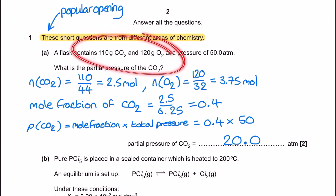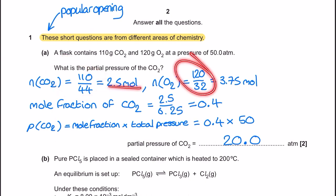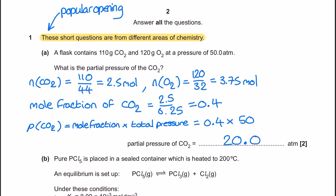We know the gas mixture is just CO2 and O2, and we've got masses for those. Using mass divided by molar mass I can find the individual mole values for the CO2 and O2, add those together to get a total of 6.25 moles, and then the mole fraction of CO2 is 2.5 divided by 6.25, giving 0.4. The sum of all mole fractions should equal 1, just as all partial pressures should equal the total pressure. Multiplying 0.4 by the total pressure gives a partial pressure of CO2 equal to 20.0.